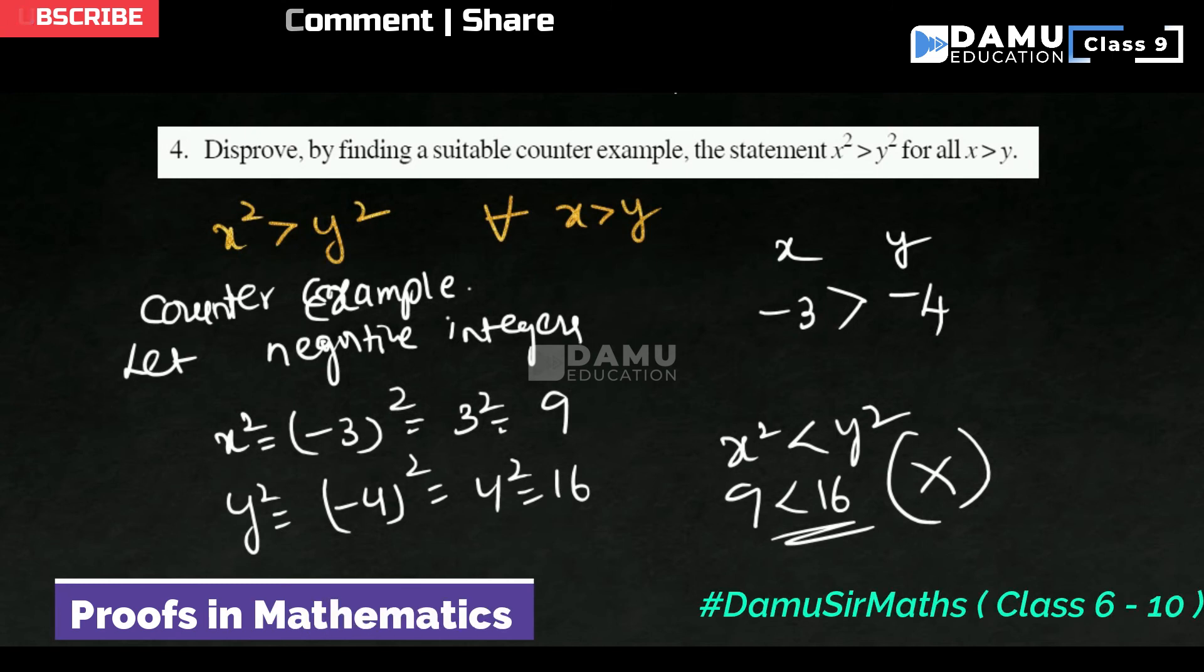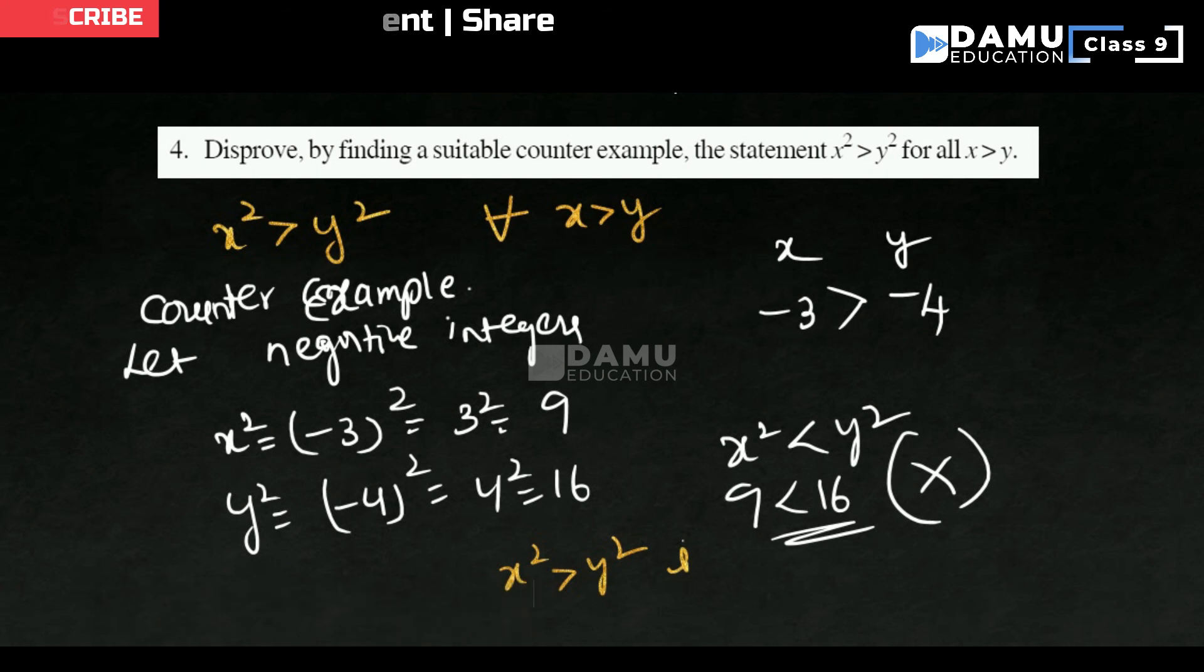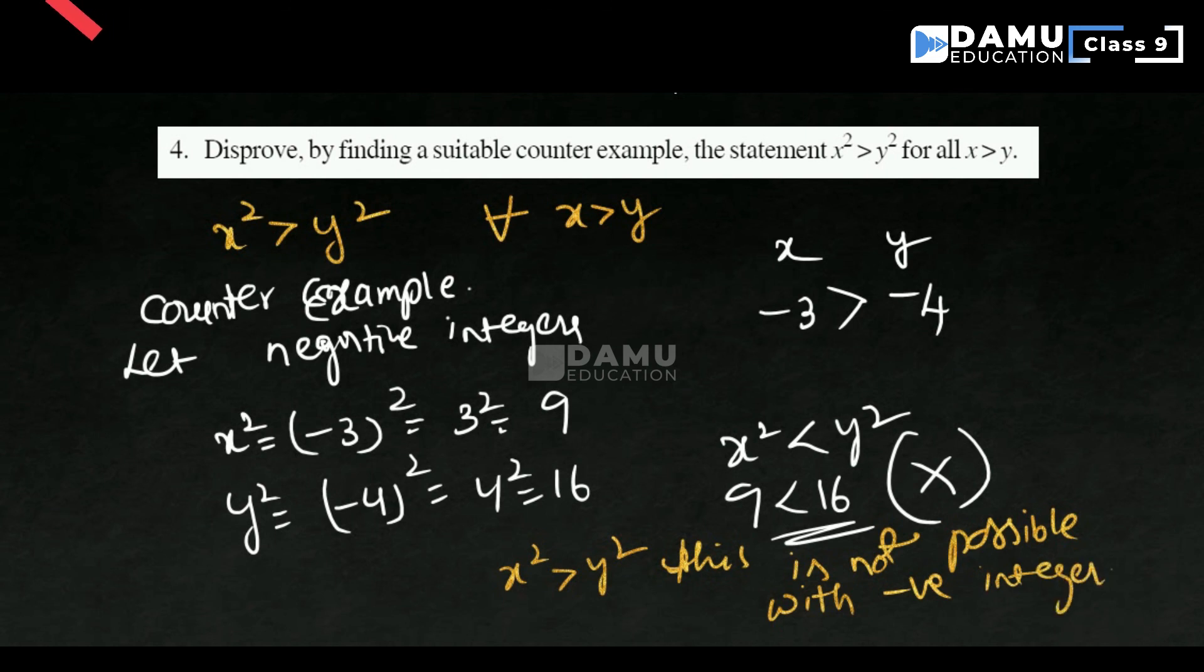They are given that x square greater than y square. This is not possible with negative integers. Like this, we need to take one example and we have to prove. Thanks for watching. Please subscribe.